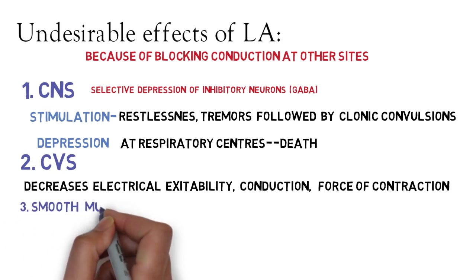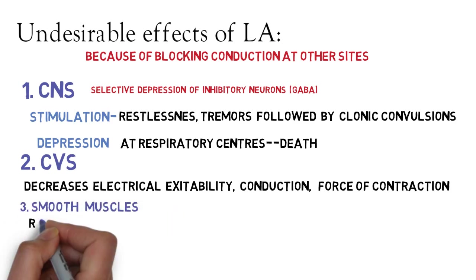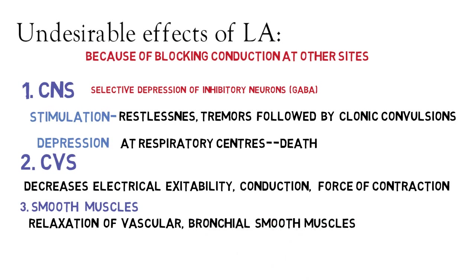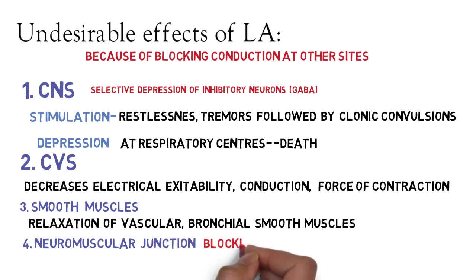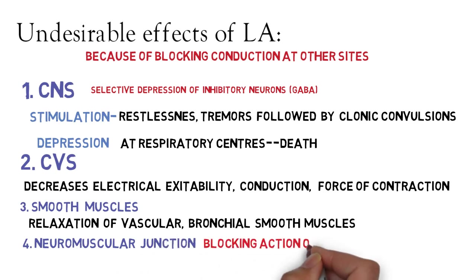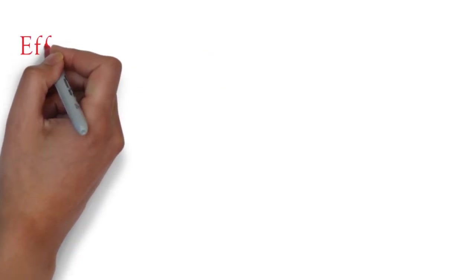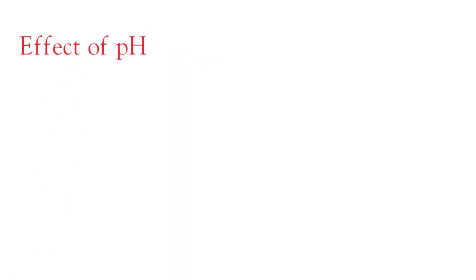Local anesthetics cause relaxation of almost all smooth muscles. At the neuromuscular junction, since NMJ activity is under the control of acetylcholine (ACh), blocking ACh-mediated depolarization causes muscle relaxation.